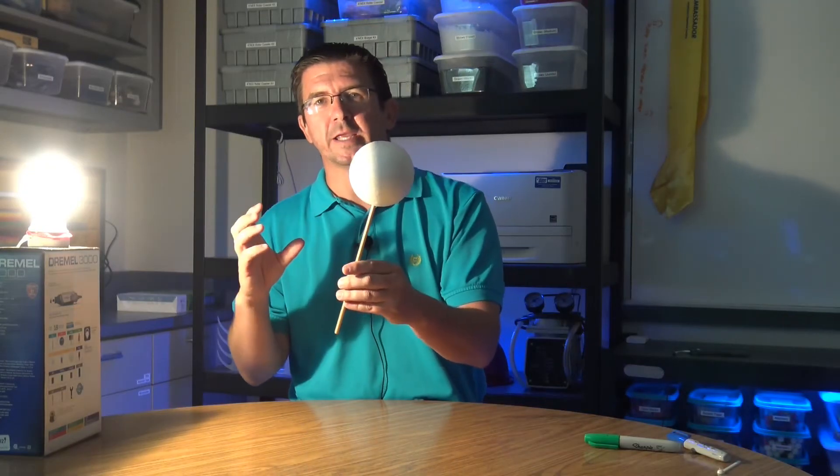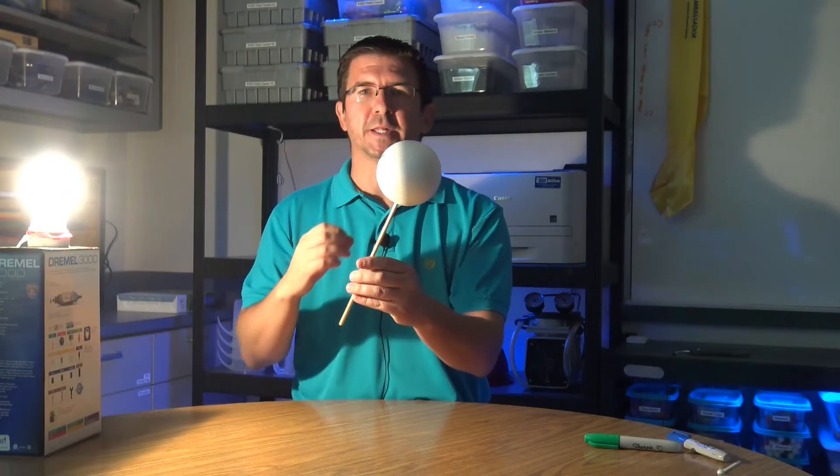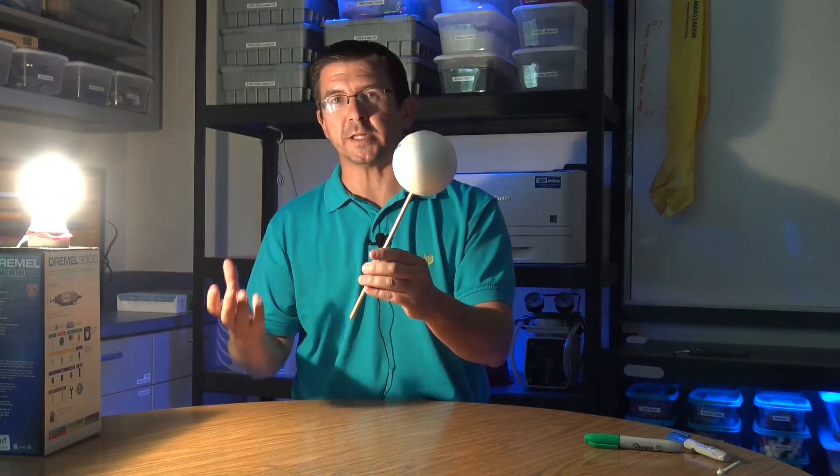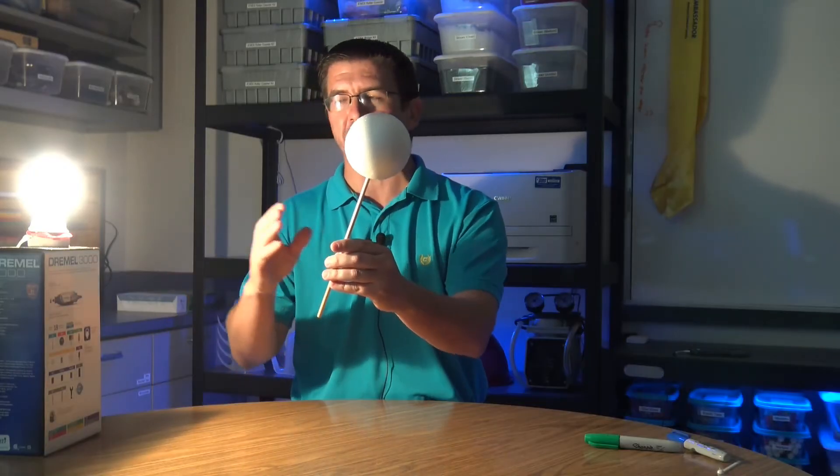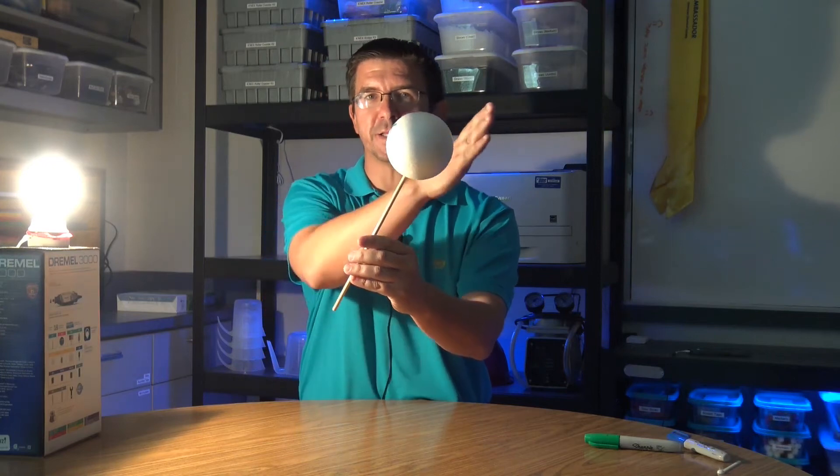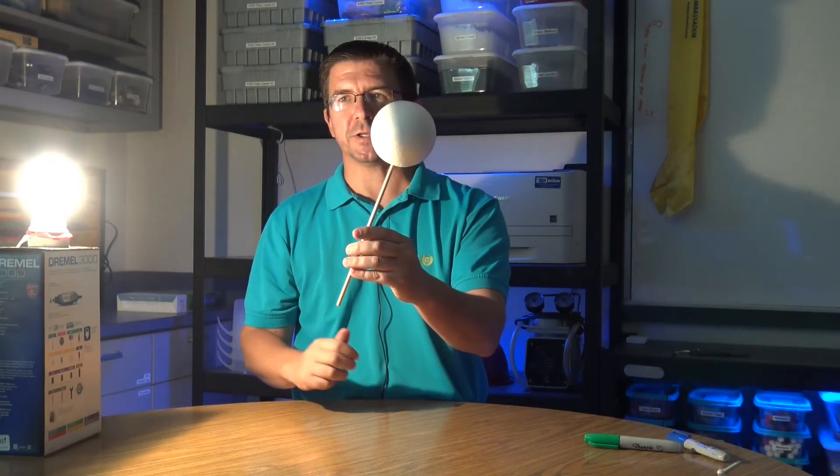So this shows us already what's happening to cause day and night. We said that half of Earth is always experiencing day and the other half is always experiencing night. And it's because of the fact that the sun can only light up half of Earth's surface at once. The other side is facing away from the sun and it's shadowed.